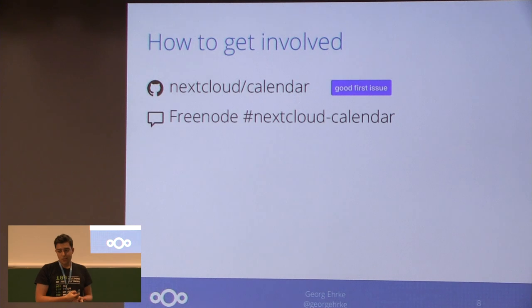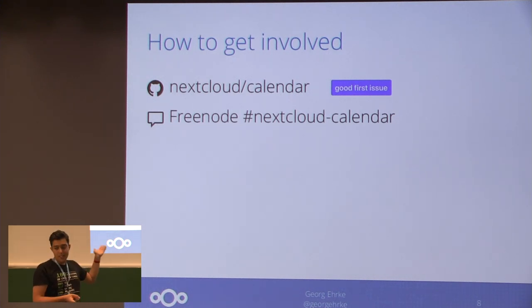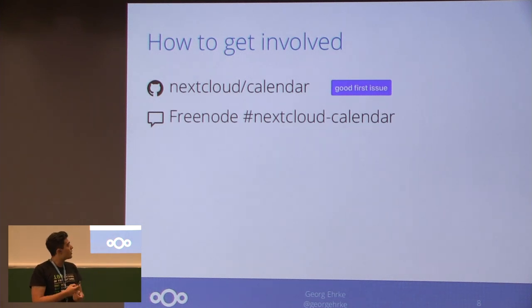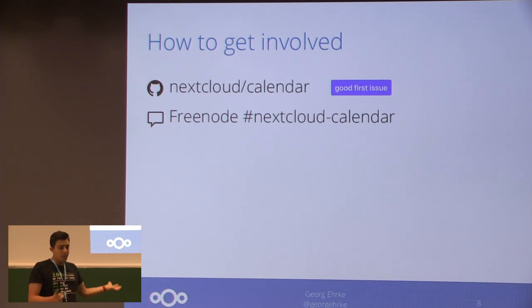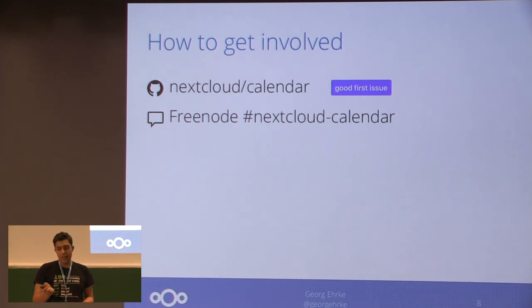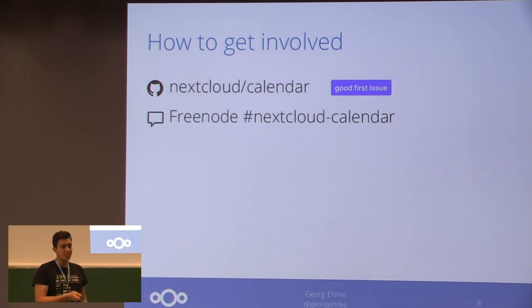If you're interested, you can also help us or genuinely get involved. We are obviously on GitHub in Nextcloud Calendar. There are Good First Issues — currently around ten issues labeled with Good First Issues — and they all have descriptions on how to get started. And if you just have a question or want to get in touch, you can ping us on IRC at Freenode in the channel Nextcloud Calendar.